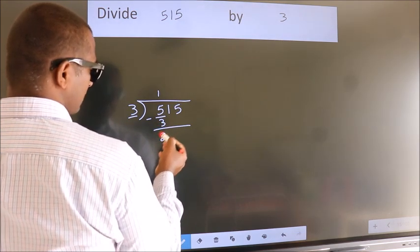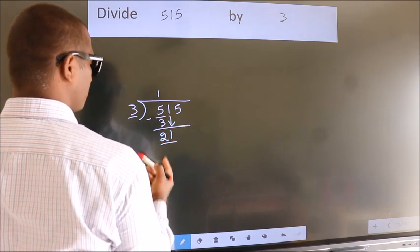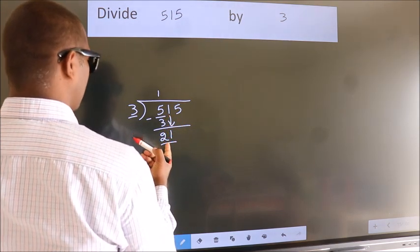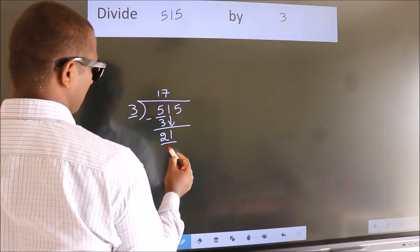After this, bring down the beside number, so 1 down, so 21. When do we get 21? In 3 table, 3 7s 21.